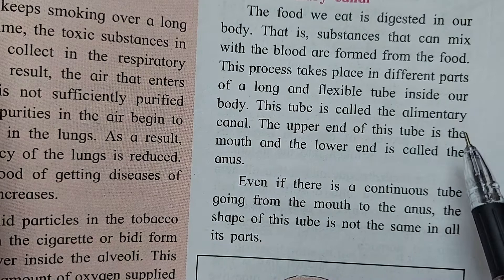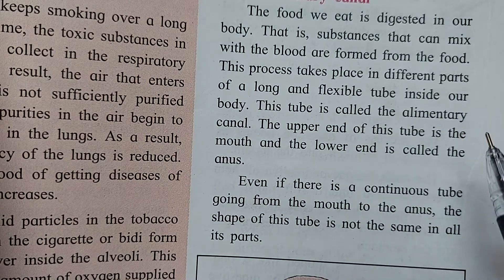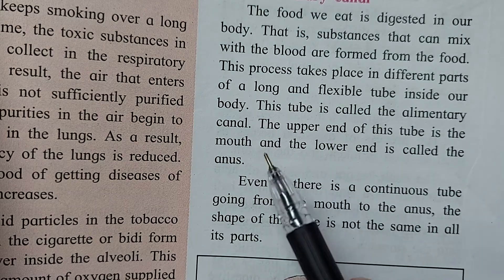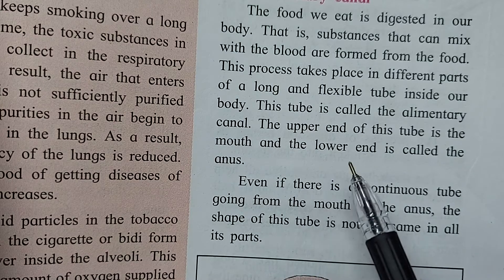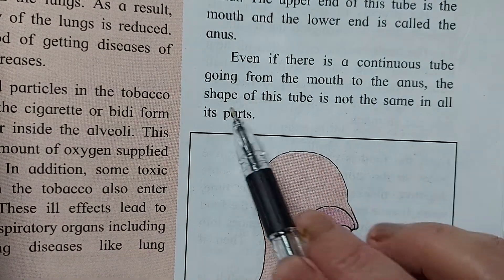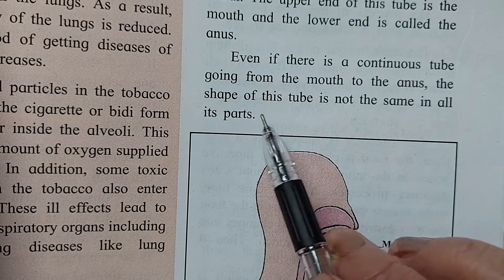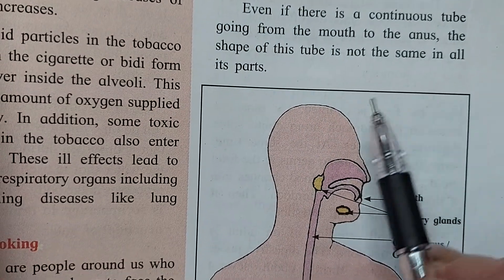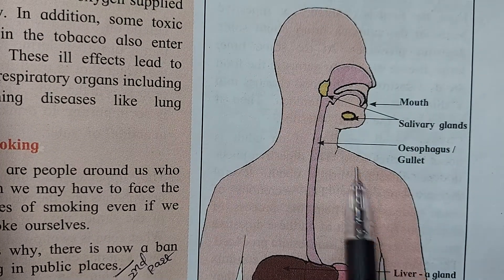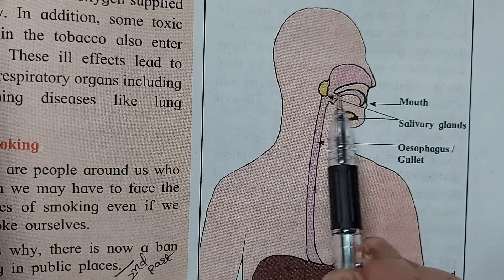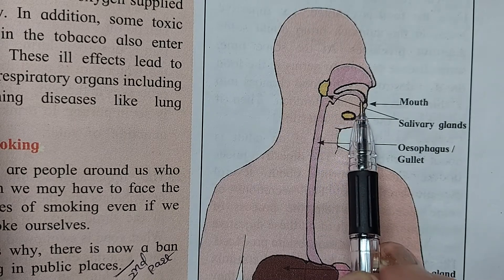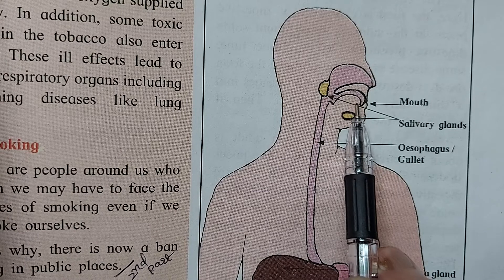This long flexible tube is called the alimentary canal. The upper end of this tube is in the mouth and the lower end is the anus. Even though it is a continuous tube going from the mouth to the anus, the shape of this tube is not the same in all parts. The digestion process starts in the mouth, as you can see in the diagram.